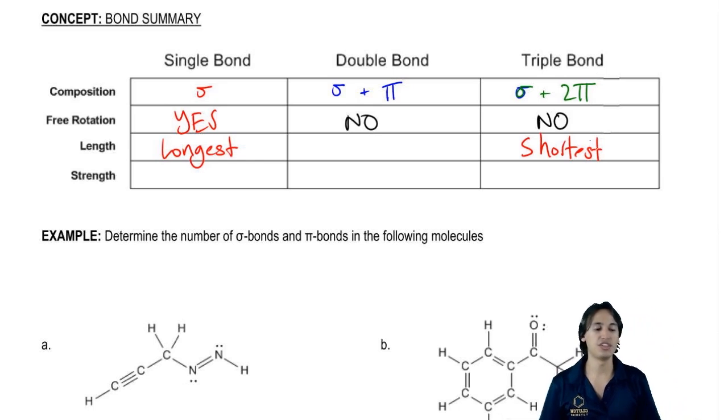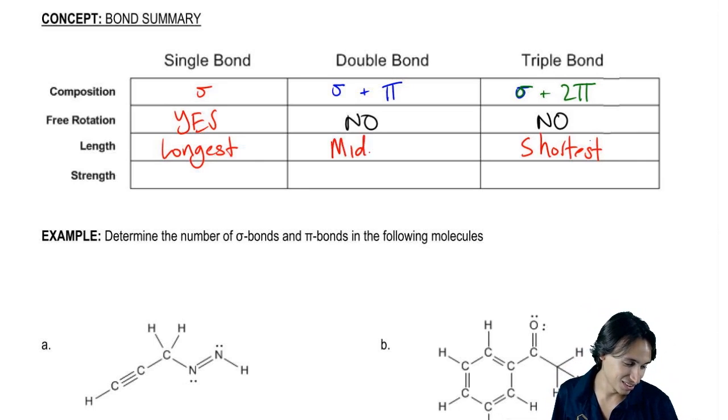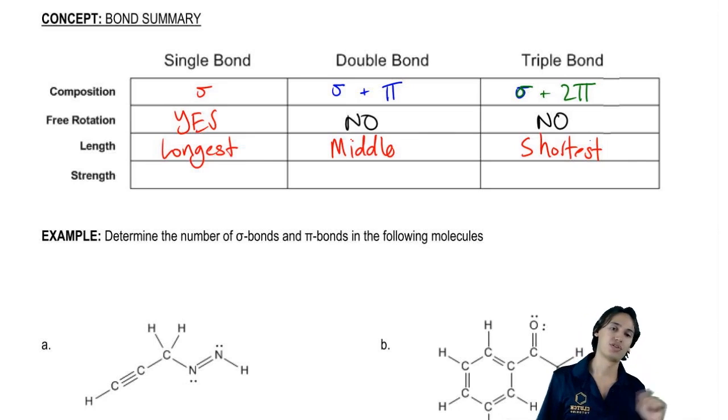And it actually turns out that because the triple bond is made out of one sigma and two pi, this one's going to be the shortest. And then you could guess that the double bond is going to be like the middle child, just put it in the middle. Going to be in the middle, not quite as long, but not quite as short.